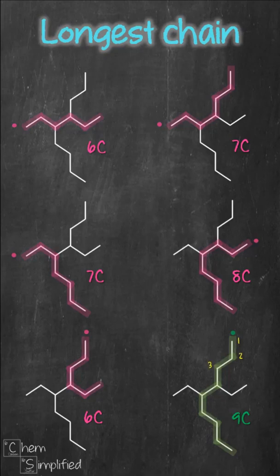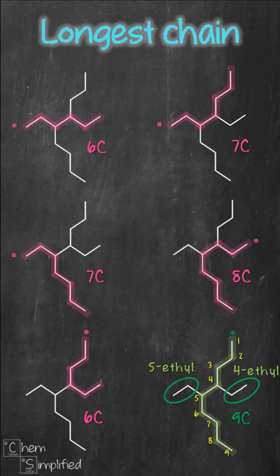We number the chain from the top since it's nearest to the two substituents, and we end up with two ethyl groups. The final name for the compound is 4,5-diethylnonane.